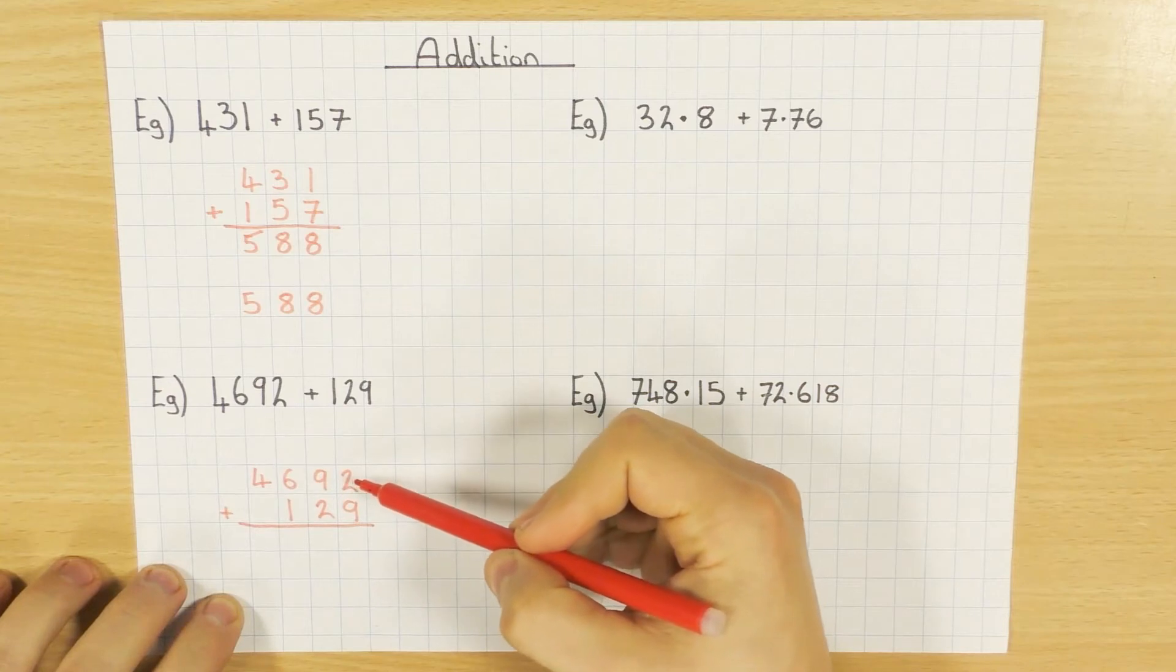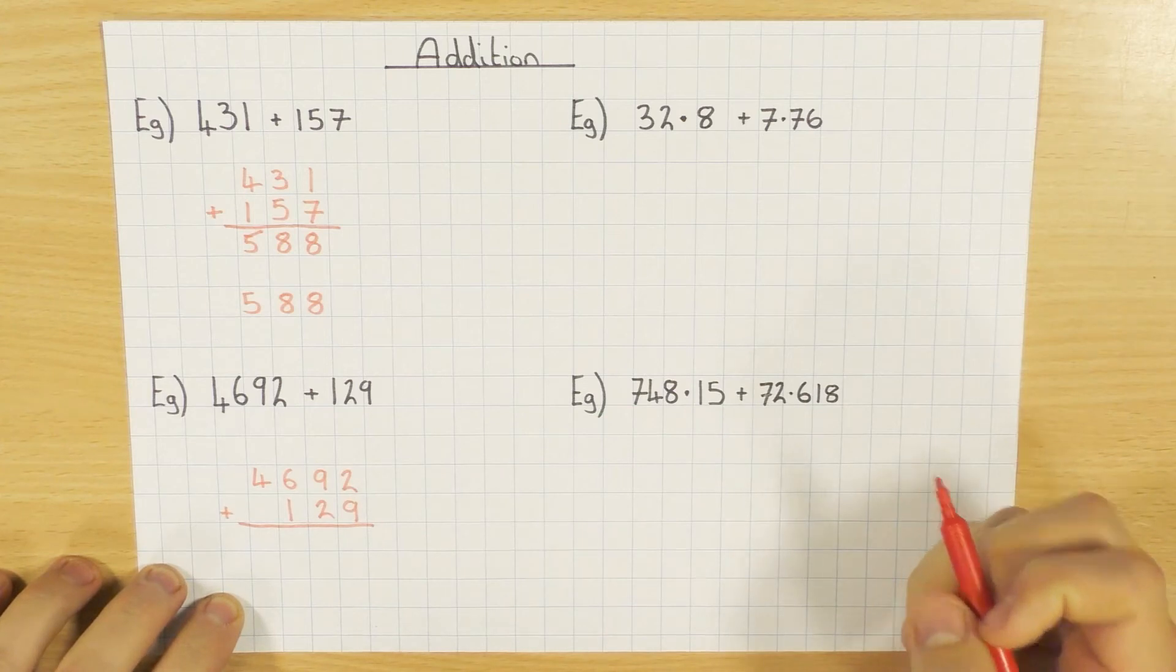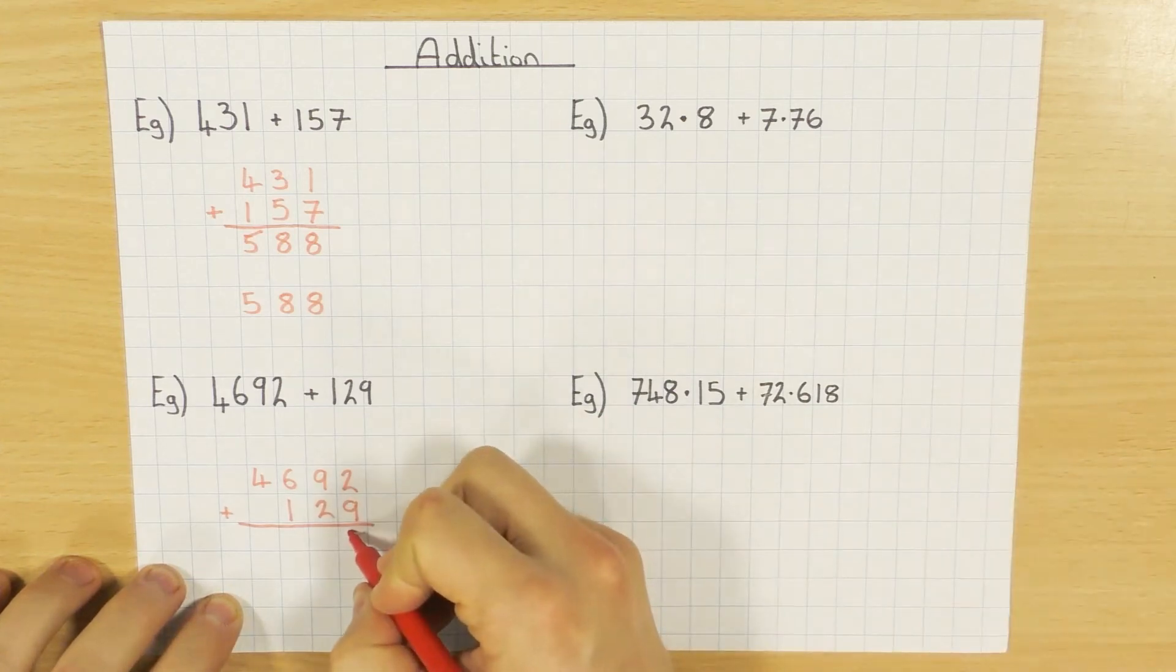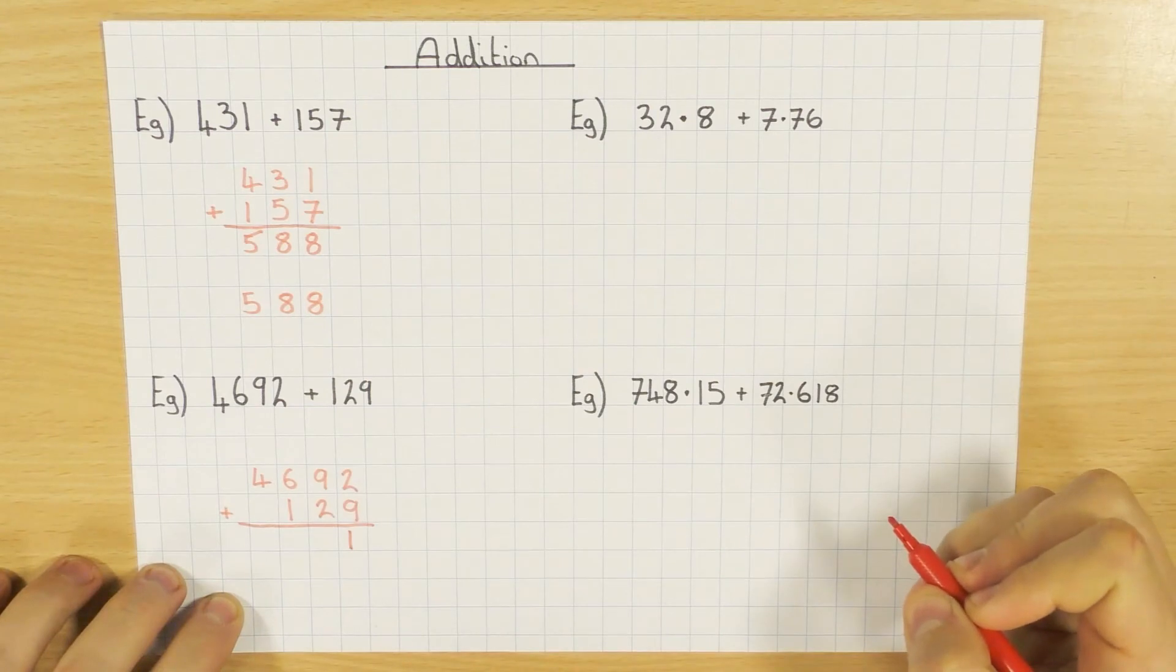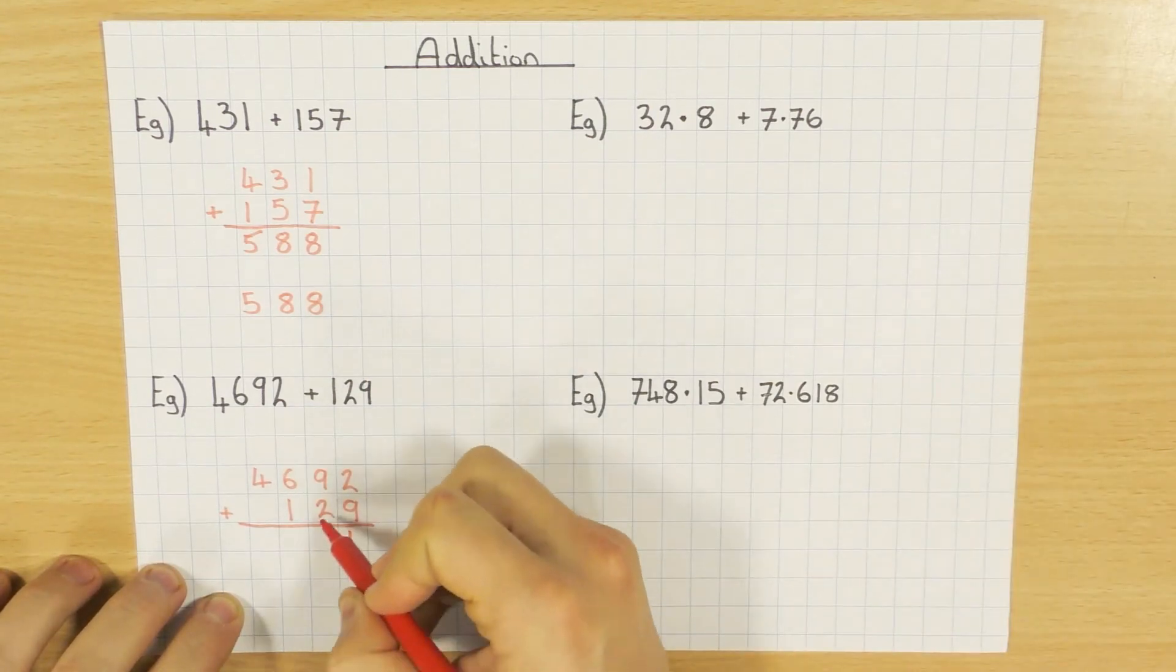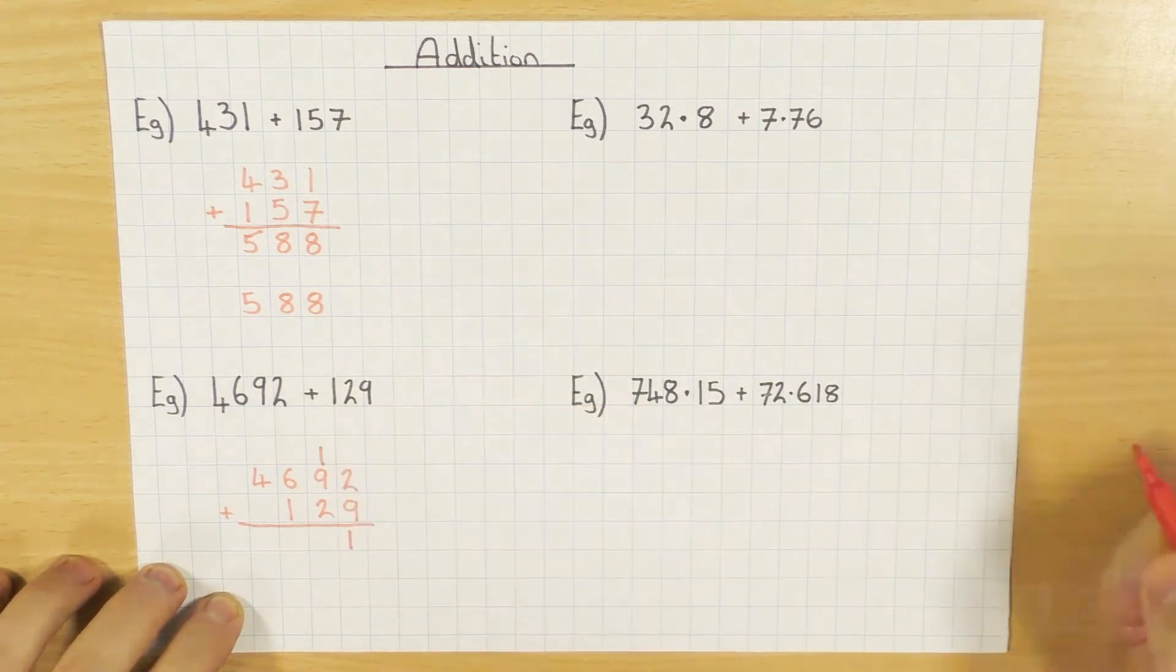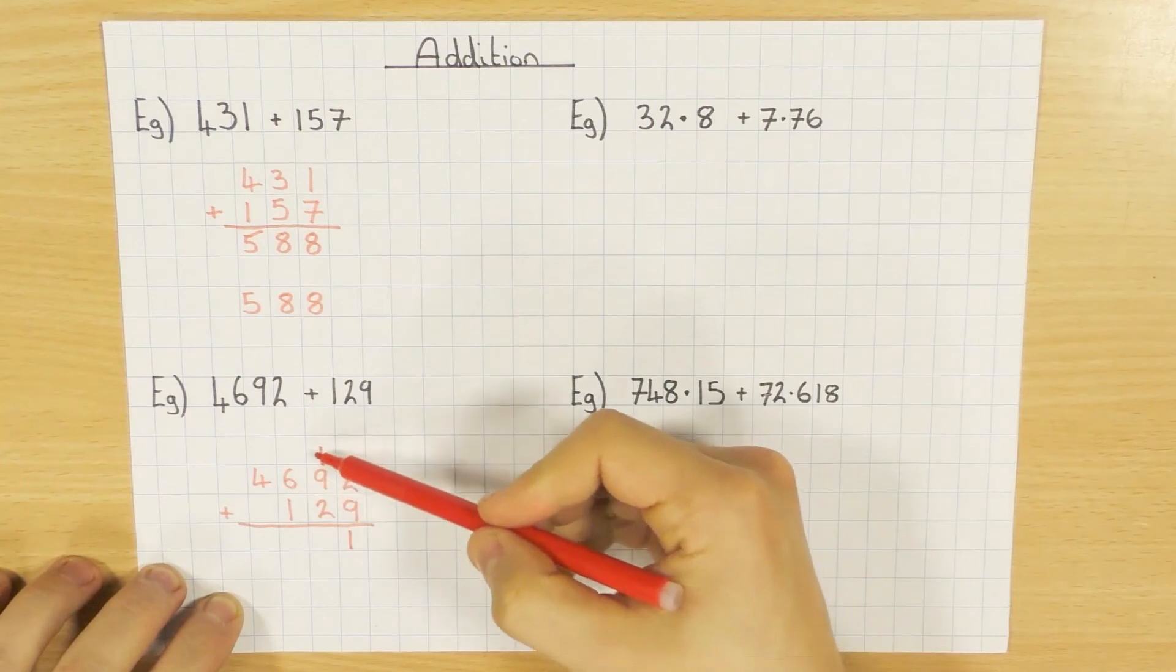And here we have the first interesting case. So on the right hand side here, I have 2 plus 9, which gets me 11. Now most people are happy with putting the units there, the 1, and then they carry 1 over. Now, some people put it on the bottom here. Some people put it underneath here. I put it at the very top.